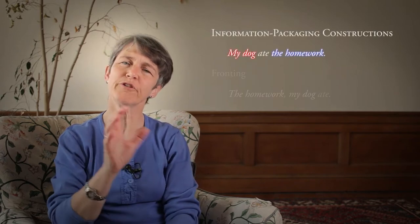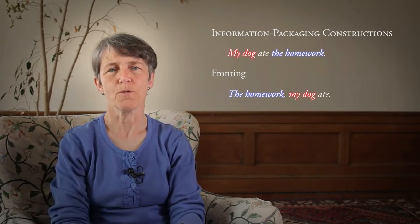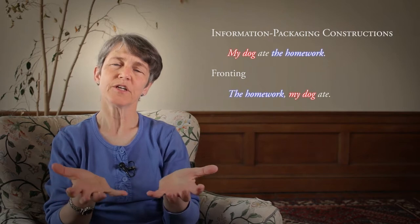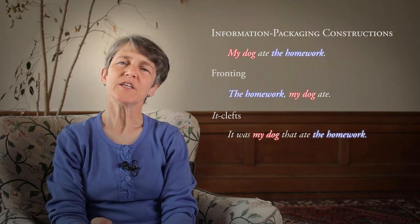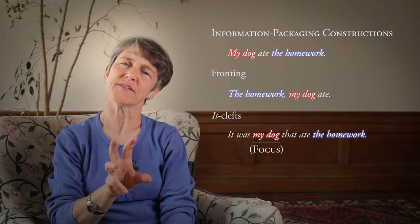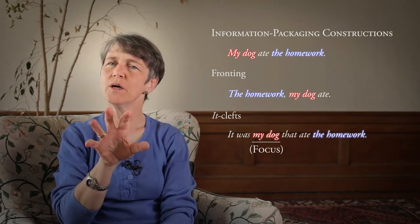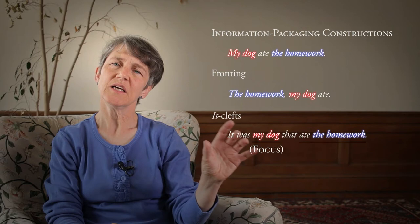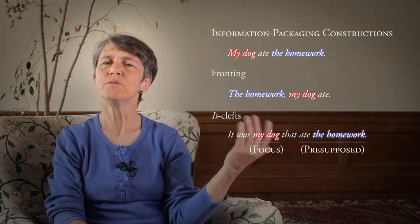We already saw that English, like many other languages, has ways to indicate particular information structure within a sentence. We use that fronting operation particularly in order to indicate contrast with something that's been said before. But there are other constructions that can be used to gain particular effects, and one that's used is the it-cleft, which is particularly used to convey focus — that is, to convey that a particular constituent conveys new information, while another part of the sentence is old information, information that's presupposed, which is assumed to be agreed.